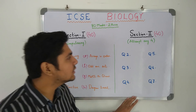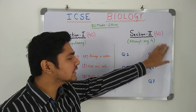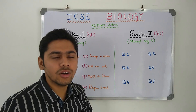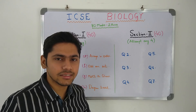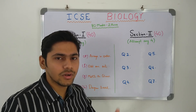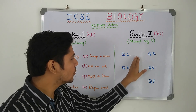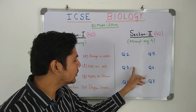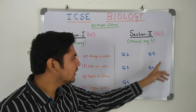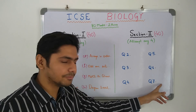Moving on to section 2. This is also a 40 marks section and you have to attempt any 4 questions of 10 marks each to give you 40 marks. You will get 6 questions in total: questions 2, 3, 4, 5, 6, and 7.